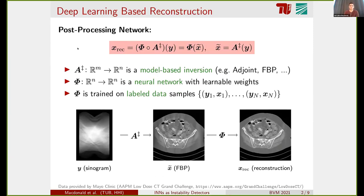This can be described as follows. We have this post-processing network setup. As I said, we first take a model-based inversion. In our case, that's the filter back projection. Then a neural network is trained on labeled data pairs to get rid of the artifacts.